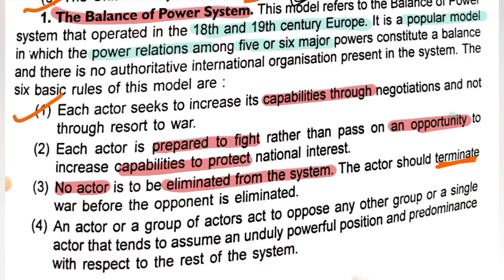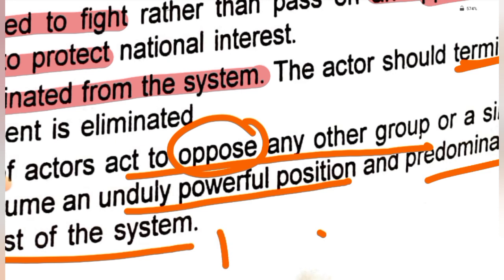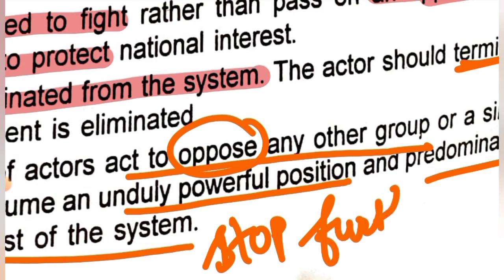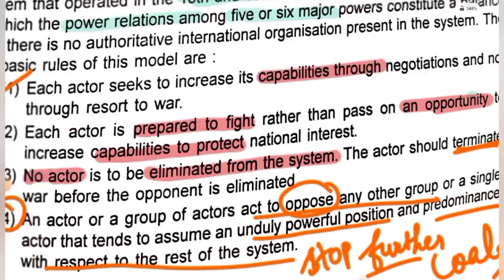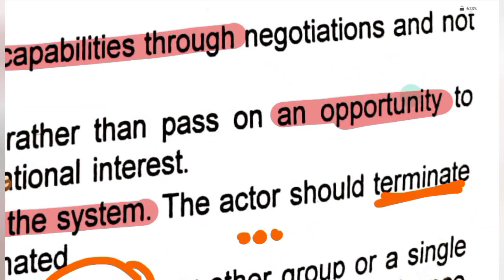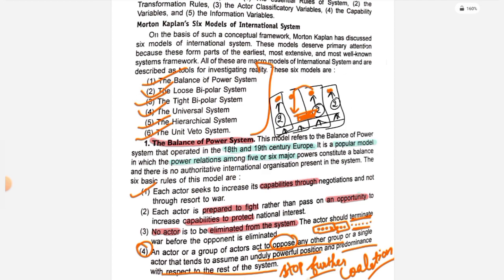The fourth point is: an actor or group of actors must act to oppose any other group or single actor that tends to assume an unduly powerful position and predominance with respect to the rest of the system. This means prevention of further consolidation — we must stop further dominance. If four nations exist and one alliance grows too strong, that imbalance must be prevented.